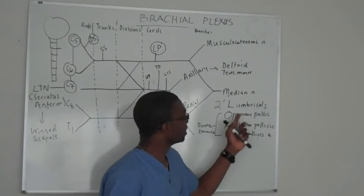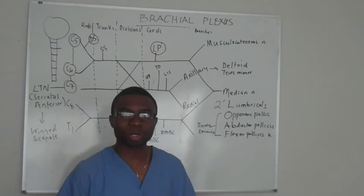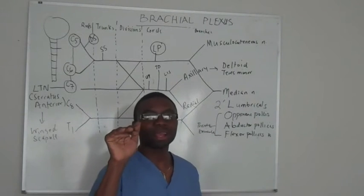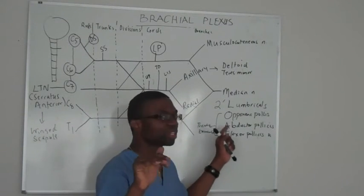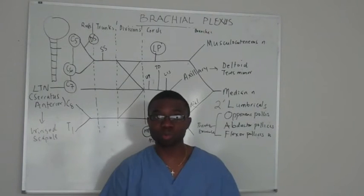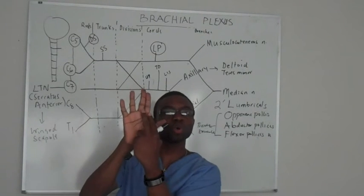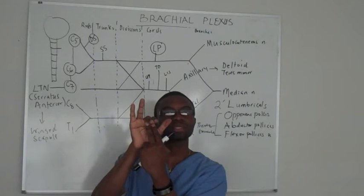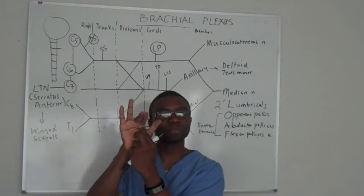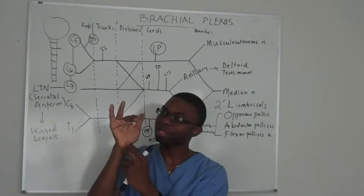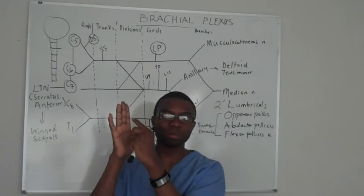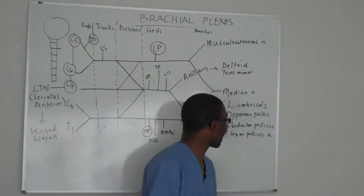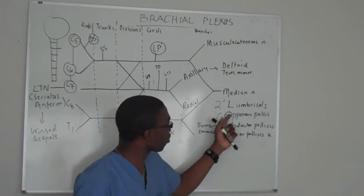Also, there are two lumbricals. The median nerve is working, and the first two lumbricals in my hand are able to flex these muscles, because I have these little lumbricals in between my metacarpal bones — I'm able to flex my hand. That's why: two loaves.